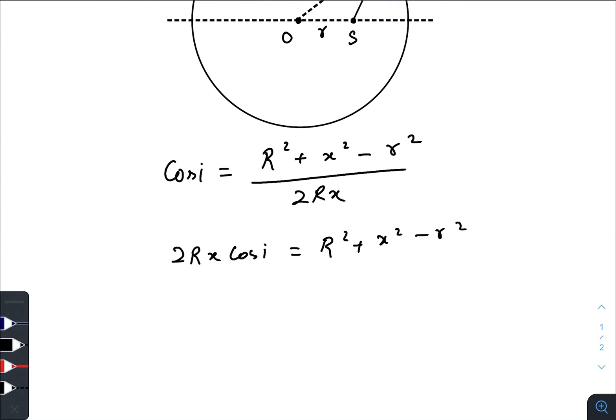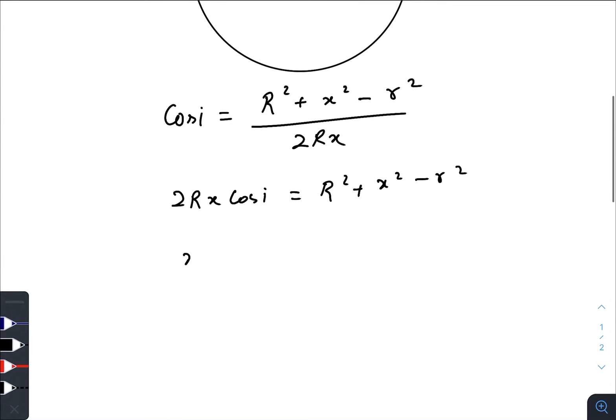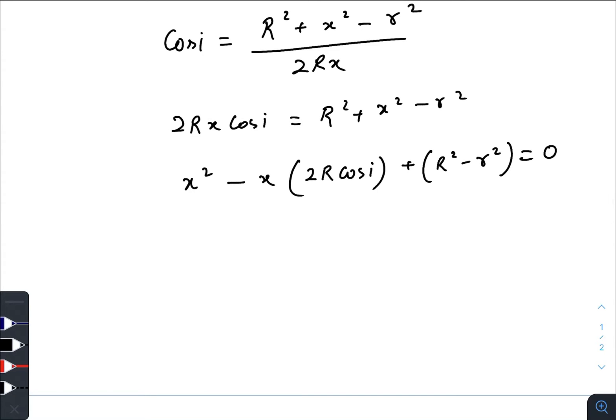Now we can write x² minus, coefficient would be 2R cos i, plus R² minus r². So we just modified the equation. As you can see, this one is a quadratic of x.